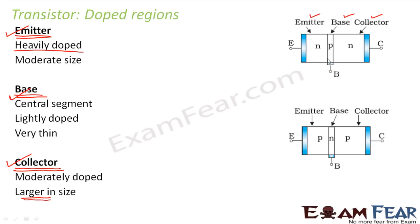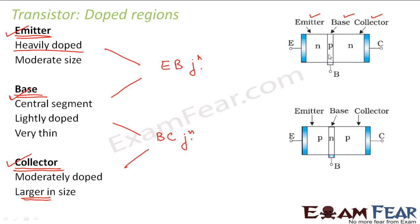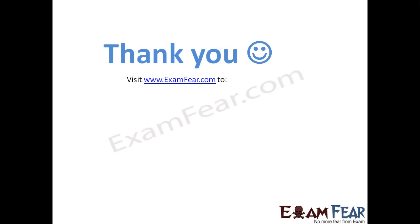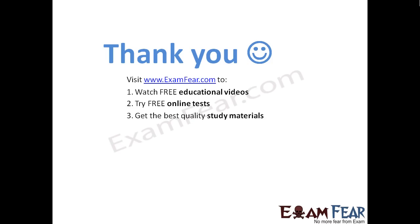The three regions — emitter, base, and collector — together form the transistor. The junction between the emitter and base is known as the emitter-base junction, and the junction between the base and collector is known as the base-collector junction. Thank you, please visit examfear.com to watch free educational videos, try free online tests, get quality study materials, and much more.